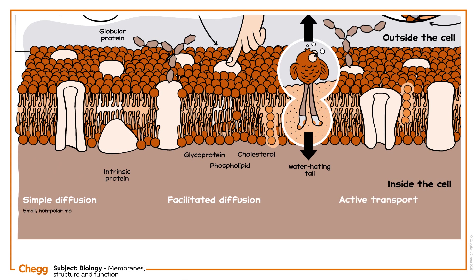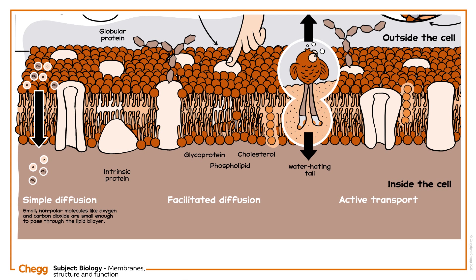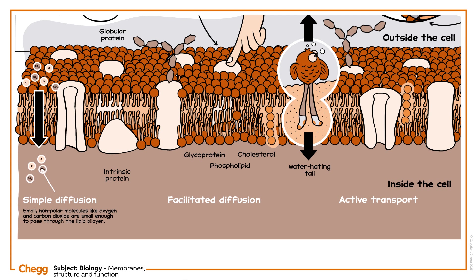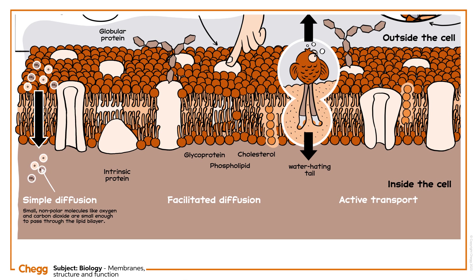Small, non-polar molecules, like oxygen and carbon dioxide, are small enough to pass through the lipid bilayer. They travel by simple diffusion, from a high concentration region to a lower concentration region. Polar water molecules can also passively travel through osmosis.